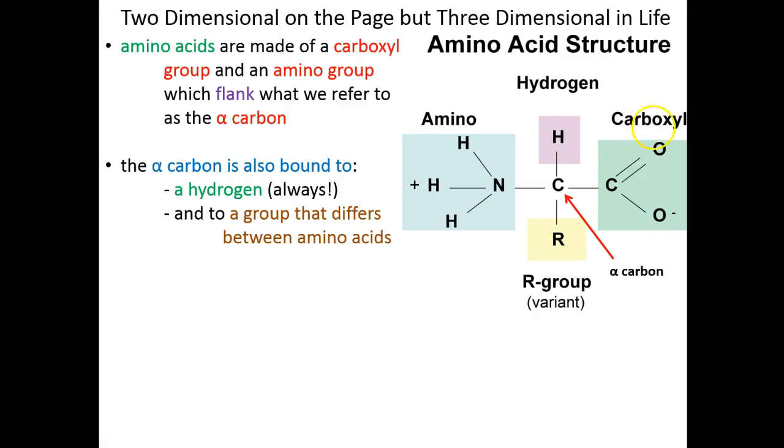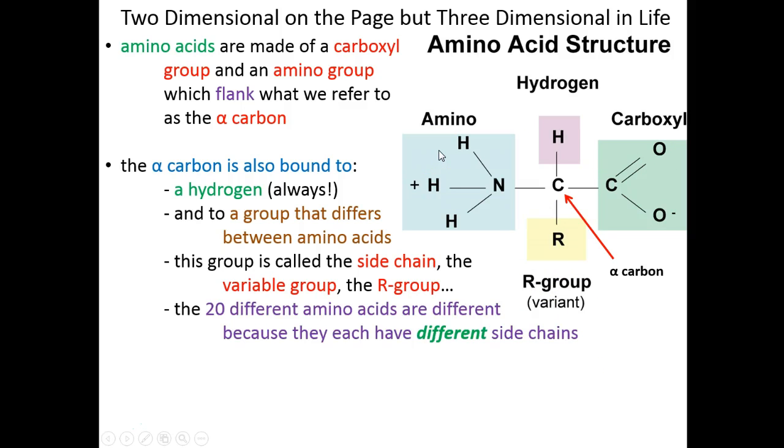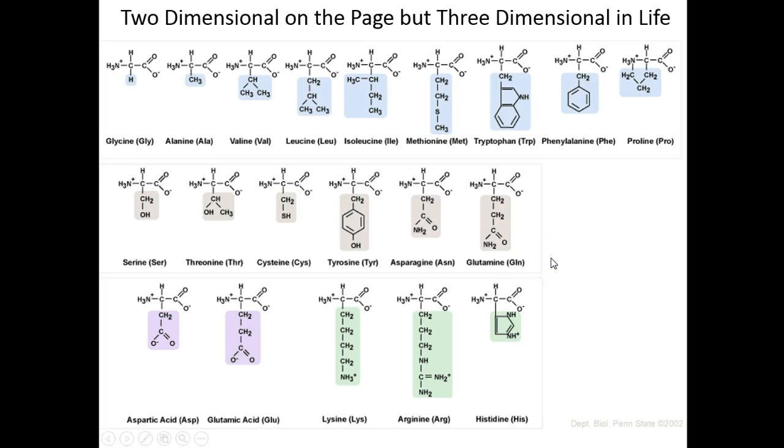And lastly, what we call a number of things. We sometimes call this the R group. Sometimes we refer to it as the variable group. But most oftenly, we call this the side chain of the amino acid. And this is what differs between all 20 of the amino acids that make up our proteins. It's what we find here that's different. All the rest is the same. So the 20 different amino acids are distinctly different because each of them have different side chains. Nothing more.